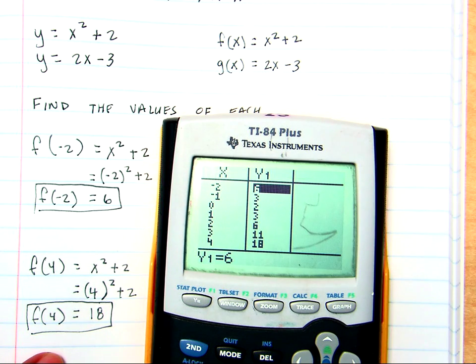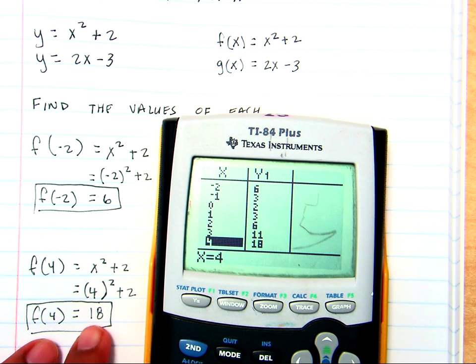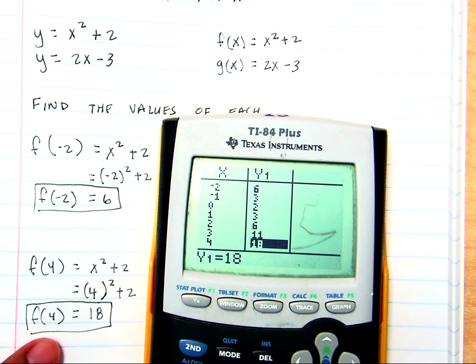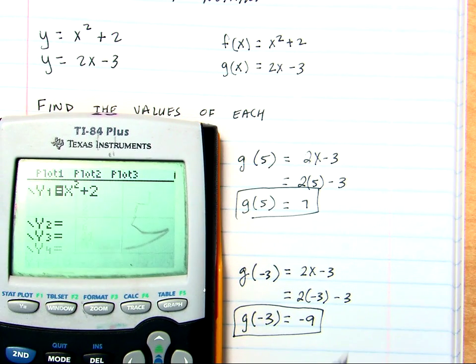Now, I'm going to go do the same thing for 4. When I go down to 4, across from it should be 18. And it is. So, that means we did that correctly.